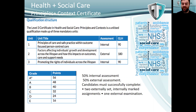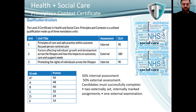Here at our Sixth Form Centre of Excellence, we offer the Certificate in Health and Social Care, which consists of three mandatory units. We cover one unit during our first year of study in Year 12, and then follow up with two units in Year 13. The unit we cover in Year 12 is Unit 2: the factors affecting individuals' growth and development across the lifespan and how this impacts on outcomes, care and support needs.